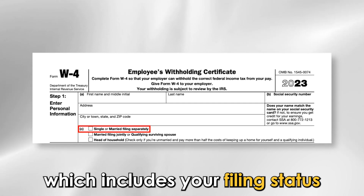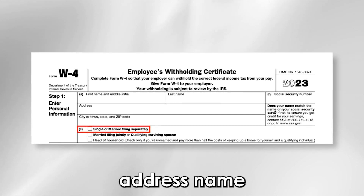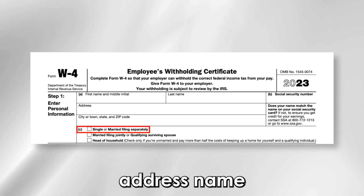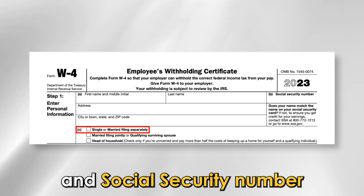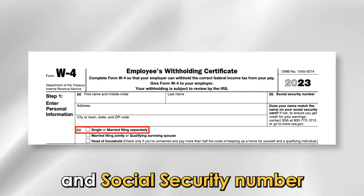Step 2 — Submit your details. Complete all of the W-4 form's personal information section, which includes your filing status, address, name, and social security number.